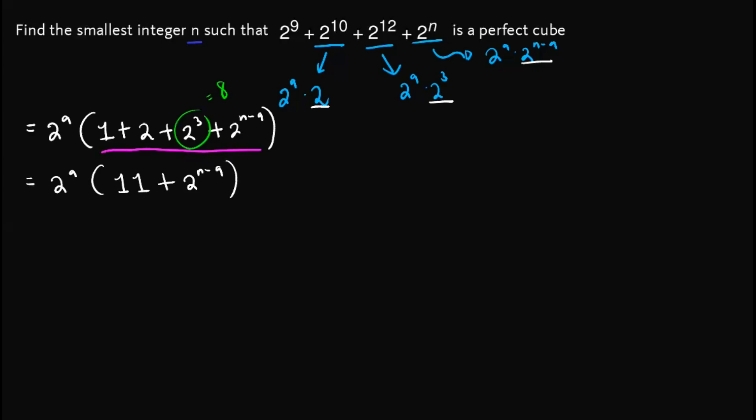So this is our expression so far, and from here, we can actually observe that 2^9 is actually already a perfect cube, since we can express this as (2^3)^3. This one is by applying the laws, another law on exponents.